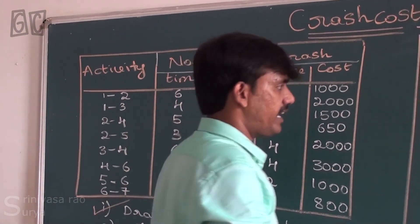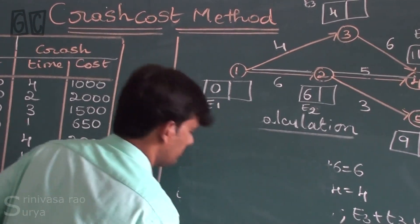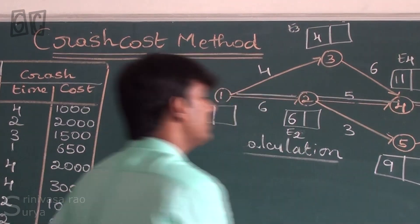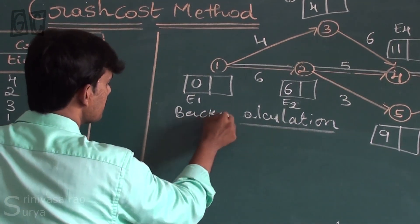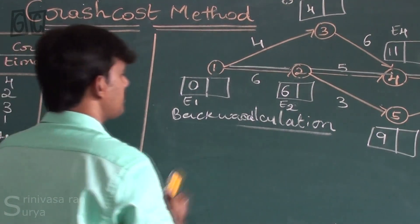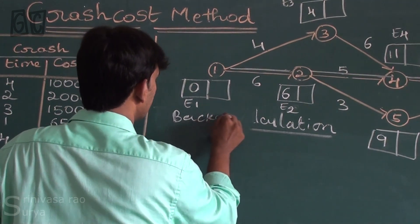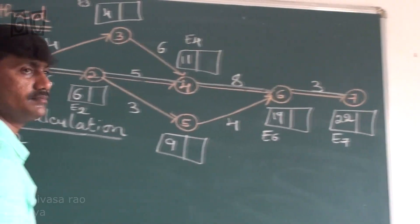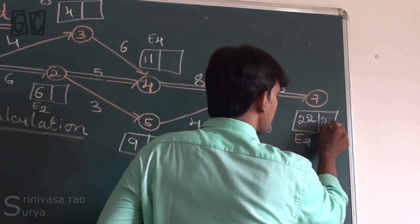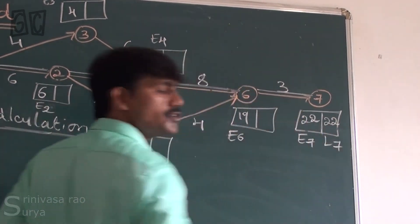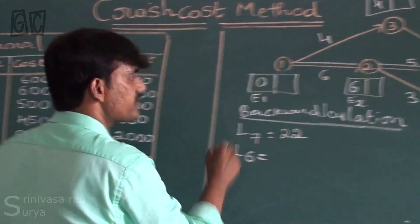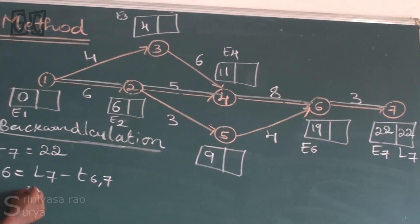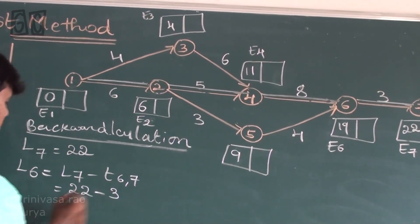Now we move on to the backward calculation. Fix L7 equal to 22 — the same value as the forward pass. L6 is inching towards L7, that is L7 minus time taken from 6 to 7, so 22 minus 3 gives L6 equal to 19.